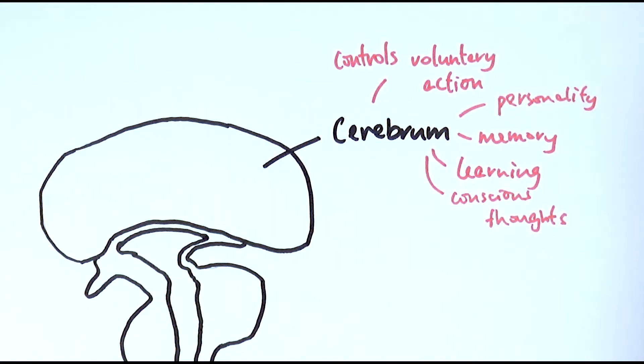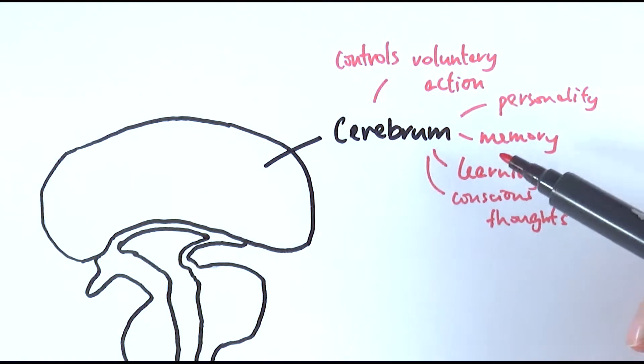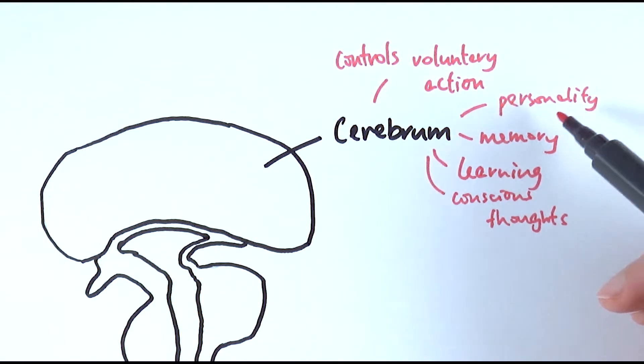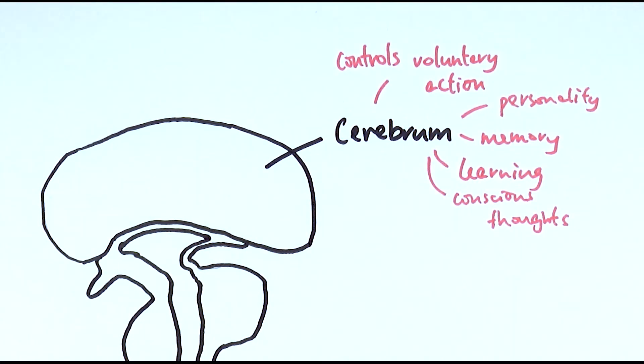So for example, if someone has got into an accident and they've lost their memory, then it's perhaps the specific part of the cerebrum that has been damaged that affected their memory. Or there are cases where people wake up from an accident and just completely change their personality. And again it's because of an effect on the cerebrum as well.